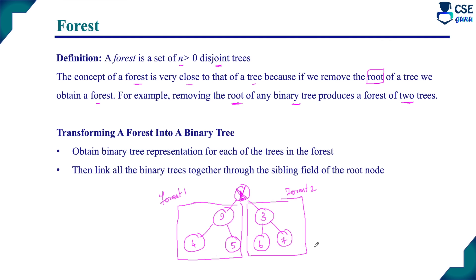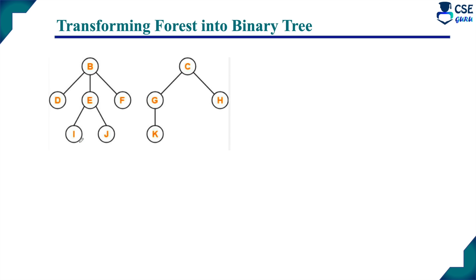Now, how to transform a forest into a binary tree? First, obtain the binary representation of the given forest. Then link all the binary trees together through the sibling field of the root node. Here they have given two forests — forest 1 and forest 2 — and the first step is to convert each into a binary tree.